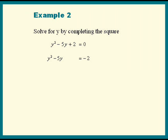And now we're ready to complete the square. Take half the middle coefficient and square it. We get 5 over 2 squared, and that is 25 over 4. Now don't forget to add that 25 over 4 to the right side also to keep things equal.